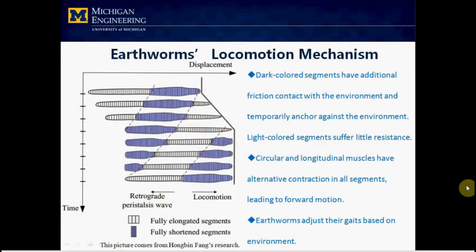alternative contraction of circular and longitudinal muscles occurs in all segments, which leads to forward motion. Dark color segments move in the opposite direction to the crowding direction, forming the so-called retrograde peristaltic wave.